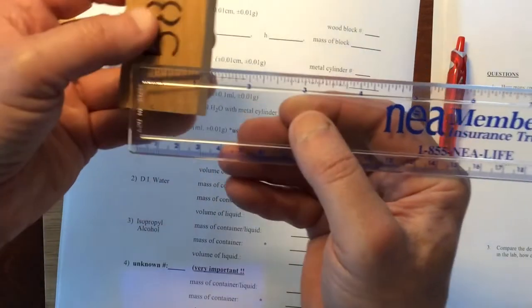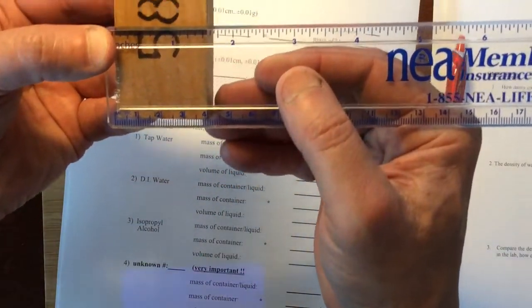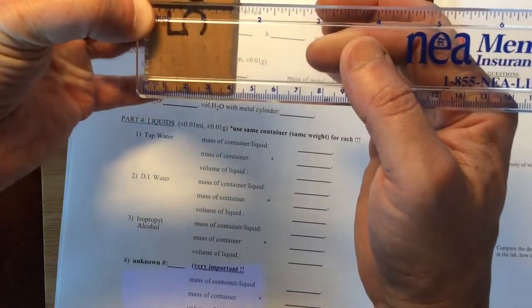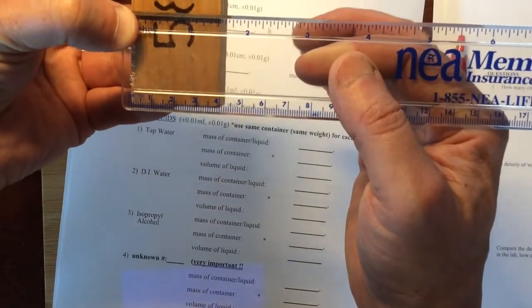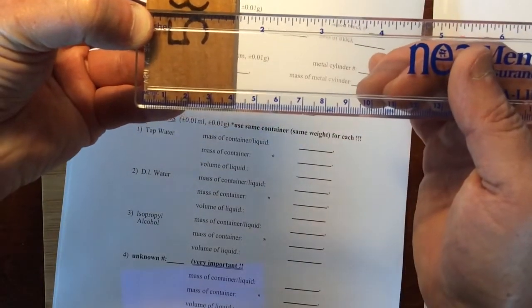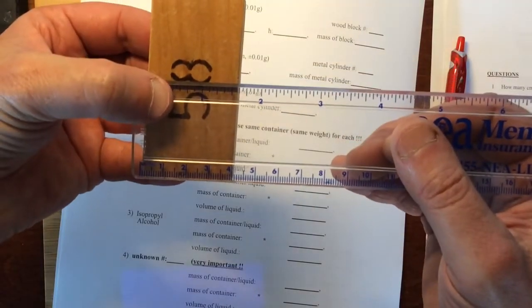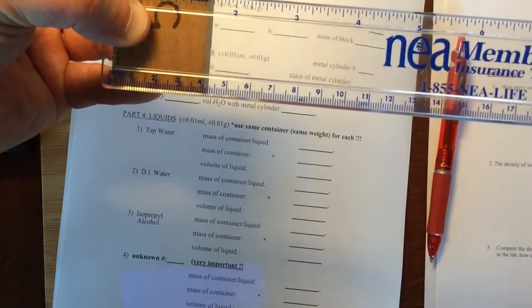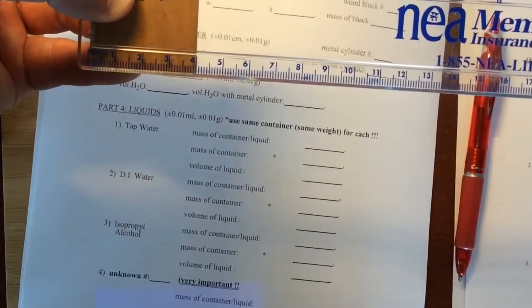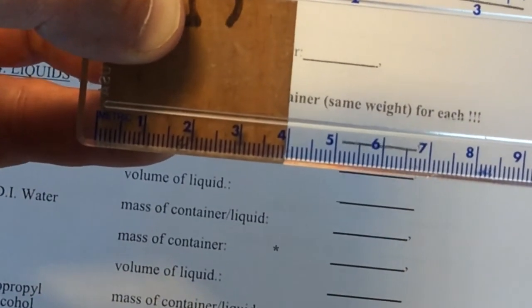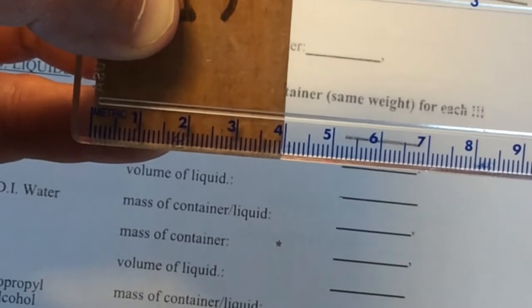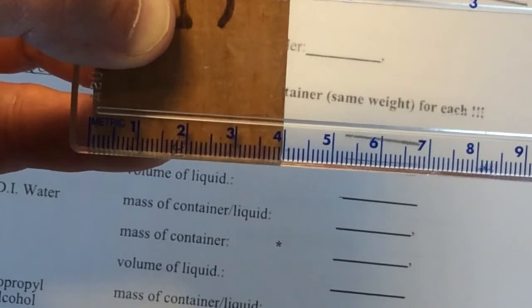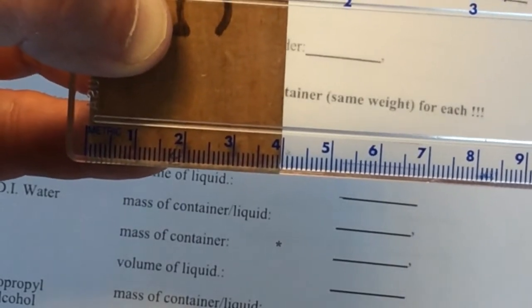Then we need to do the same thing with the other two dimensions here. This one I'm going to let you guys read. If we're happy with the meter stick being lined up right, go ahead and read that guy. This one, the block doesn't end exactly on one of those lines. So we'd probably say it's going to be 3.9 something, right?